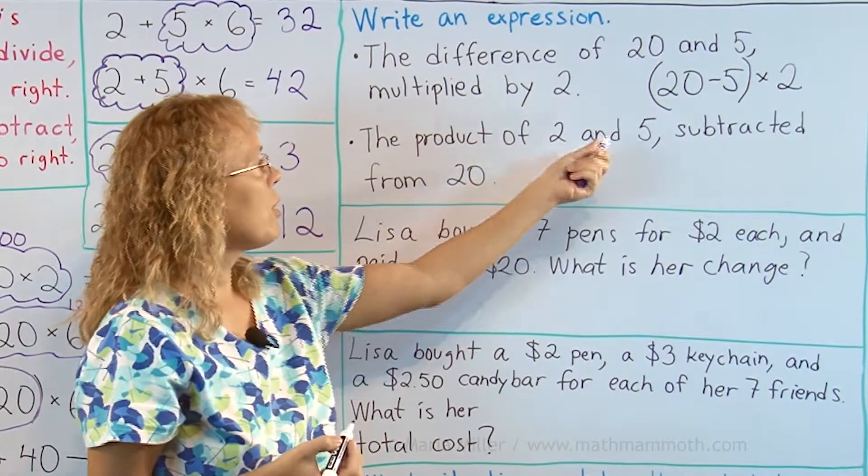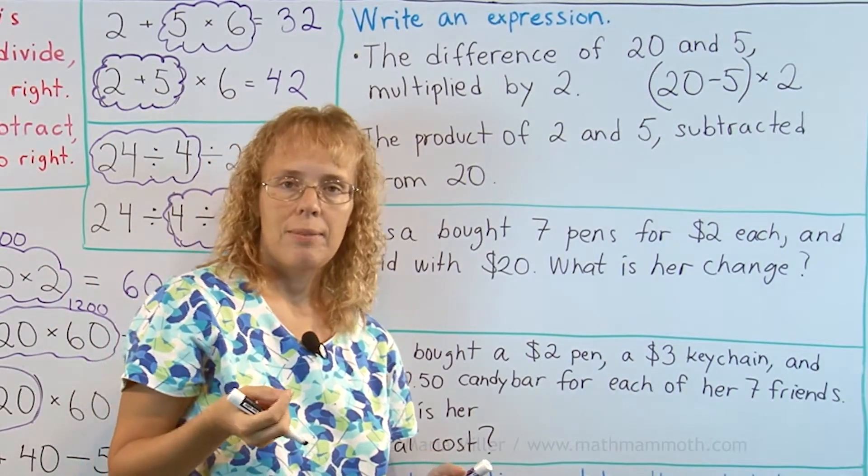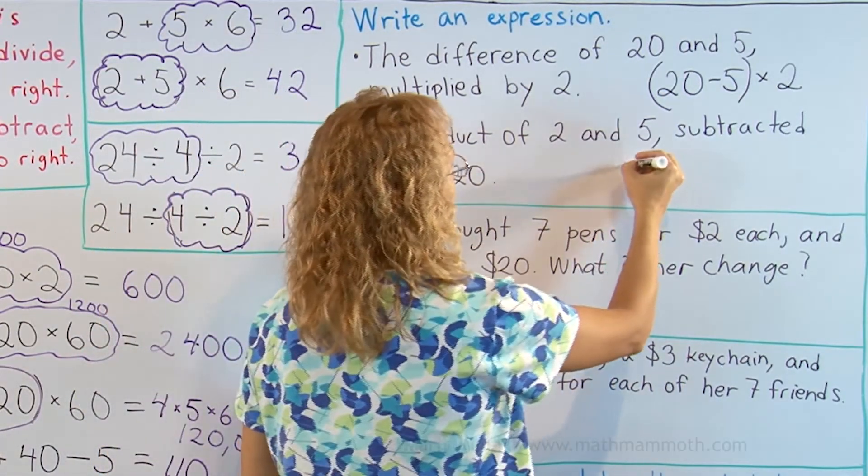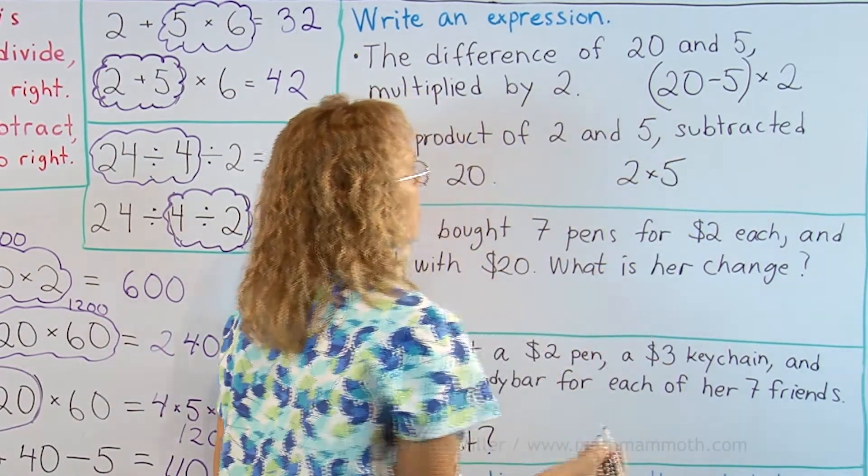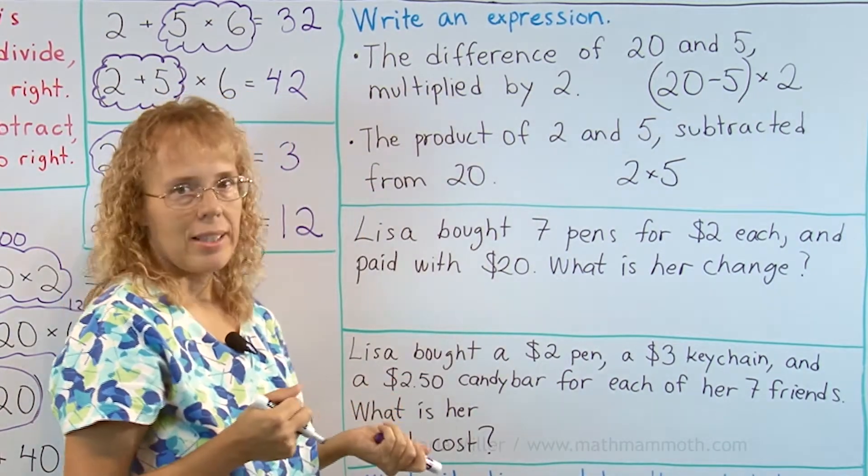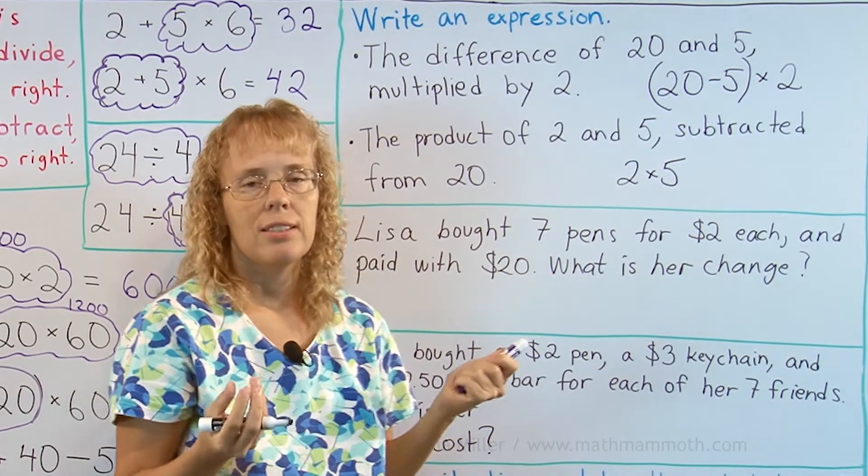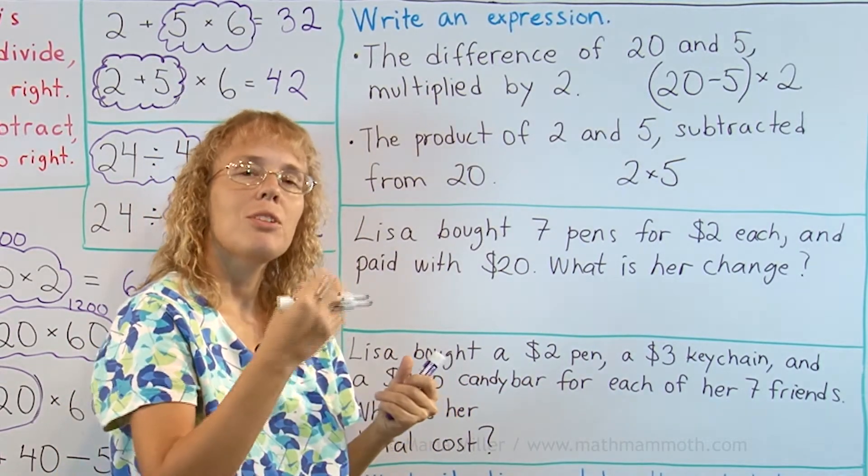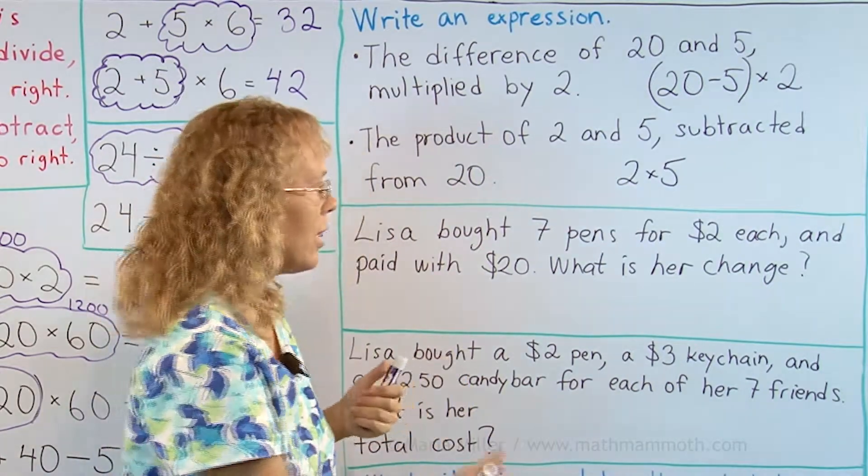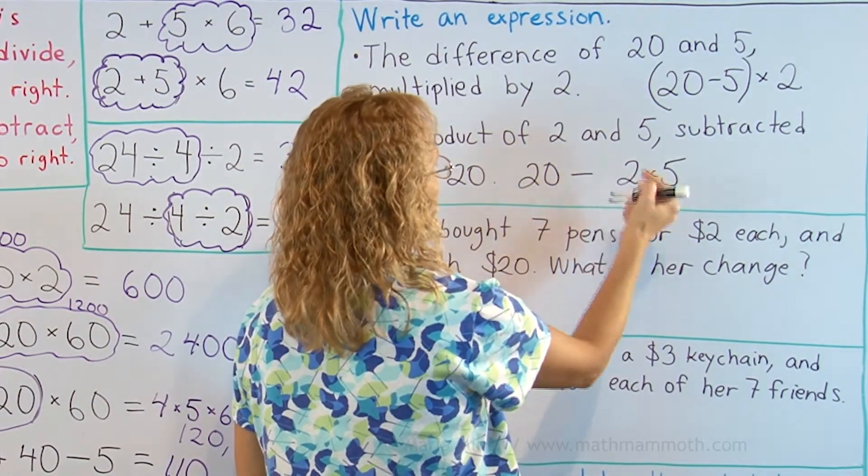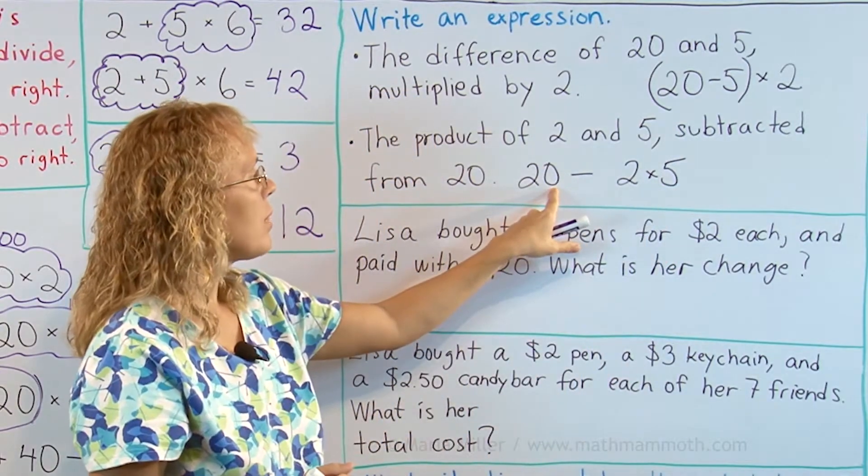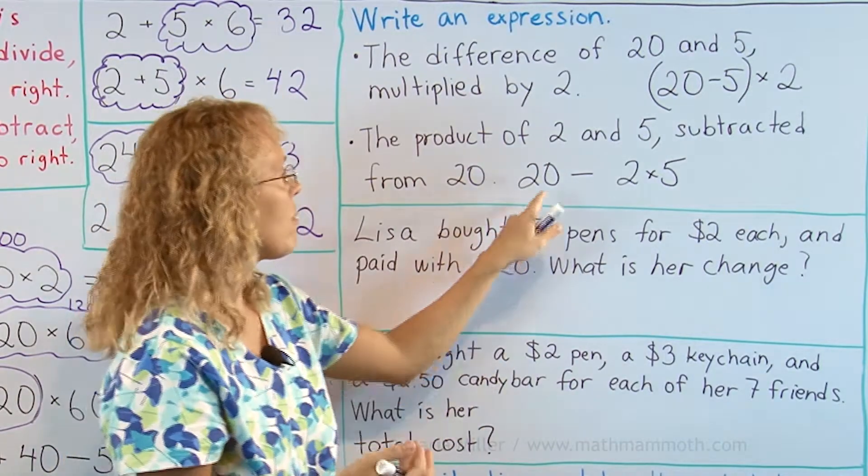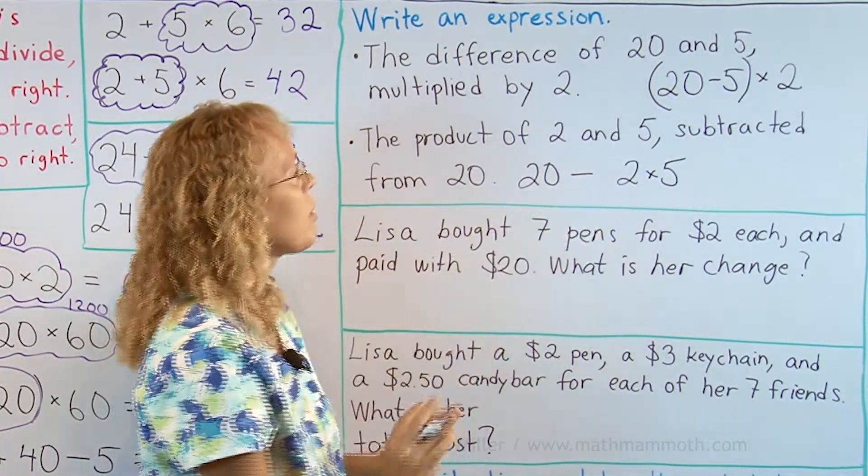The product of 2 and 5 subtracted from 20. Here this product means that you multiply the numbers, so there's 2 times 5 somewhere here. Subtracted from 20. Now this here, it's going to be 10, its value is 10, and that is subtracted from 20. That means you have 20 minus the thing, right? So you have 20 minus this one. And this is now done. When it says write an expression, it doesn't say that we have to find its value or solve how much this would be. We just have to write an expression and we are done.